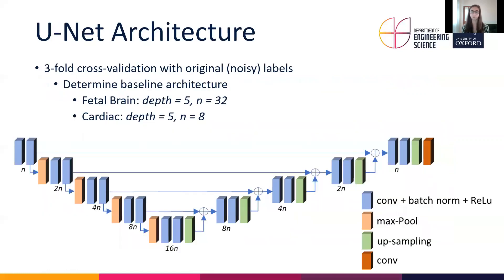We are essentially pre-processing our labels with active contours to improve them, and subsequently training a U-Net with these labels. To determine the baseline architecture of this network, we performed three-fold cross-validation with the original noisy labels for both datasets separately. For the fetal brain dataset this resulted in a U-Net with a depth of 4 and a number of feature maps in the first convolutional layer block of 32.